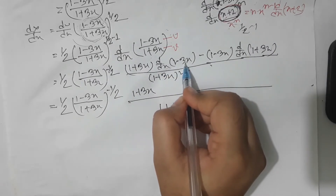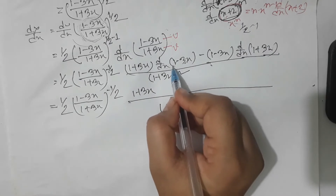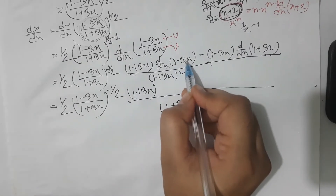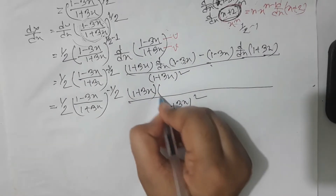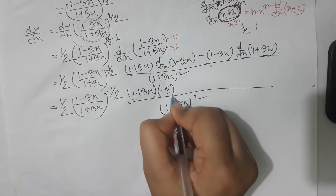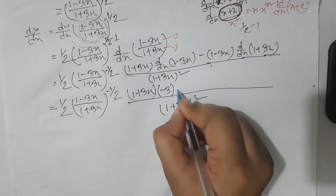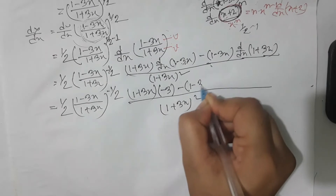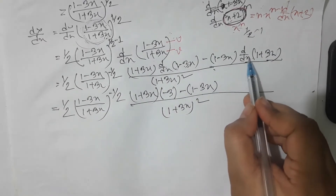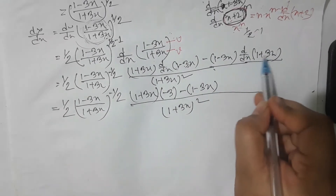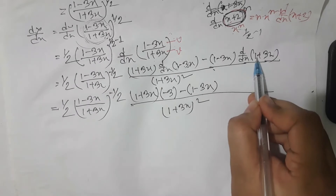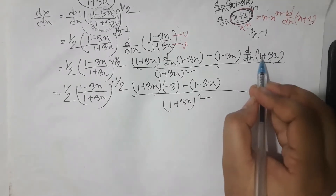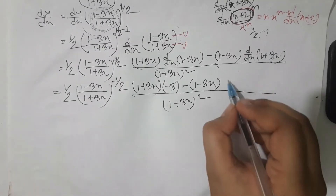The derivative of 1 with respect to x is 0. So minus 3x gives −3. Now, 1 plus 3x gives 3x, and 1·dx = 0, so 3x gives 3. I remember this idea: we have the same 3x here, so 1 + 3x is called +3.